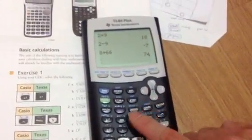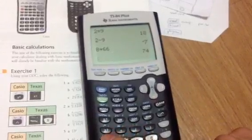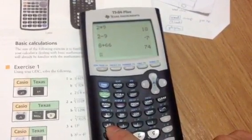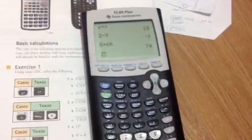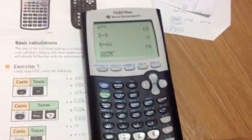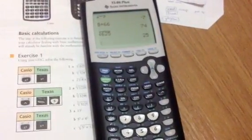First, press second, then push this button here, which is x squared but in blue has the square root above it. Then put the number and hit enter down here, and it gives you the answer 25.